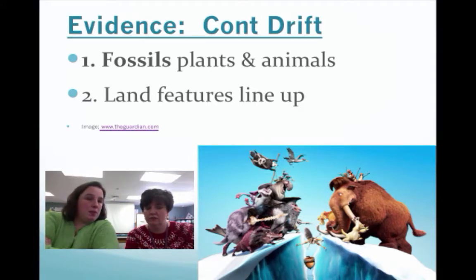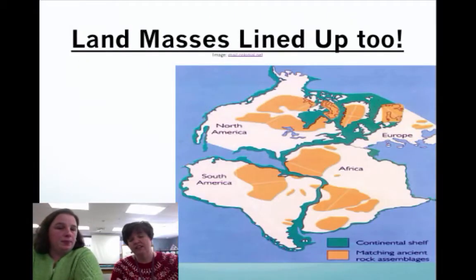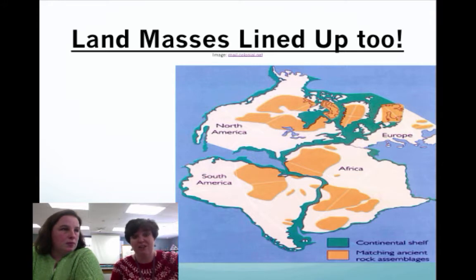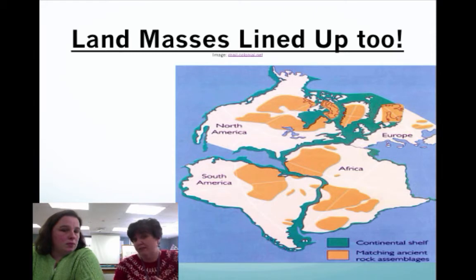Let's give a quick summary of number two. Number two says that land features lined up. So if you look at a mountain range on one side of the earth and you put it back together like a puzzle, you'll see there's also a mountain range right next to it on another piece of the earth, which is now miles and miles away. Not only mountains, but maybe a desert or flatlands — if you line them up, those land features are going to be similar.